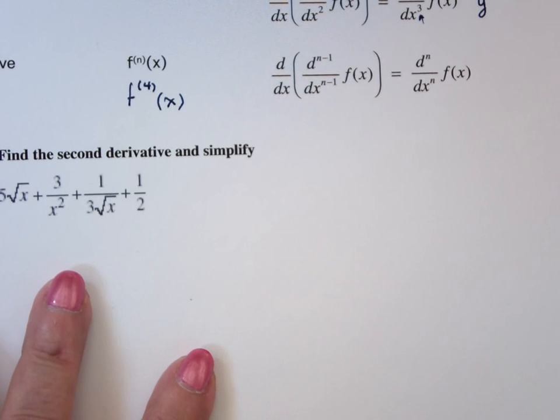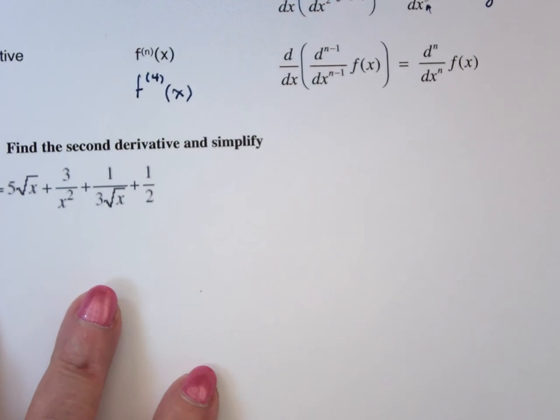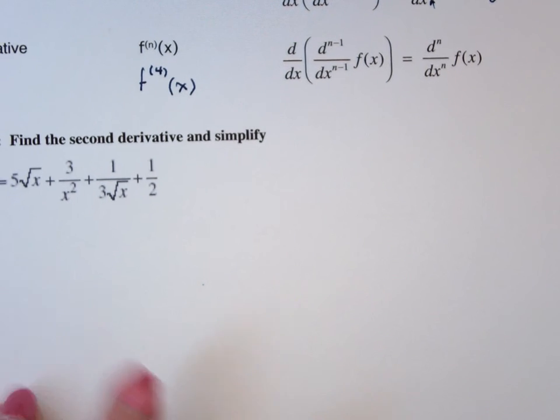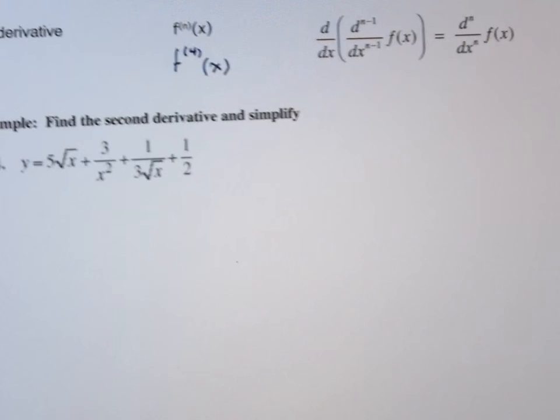This says find the second derivative. So that means I'm trying to find y double prime. That means we differentiate, and then we differentiate again. And this sometimes can be unpleasant.